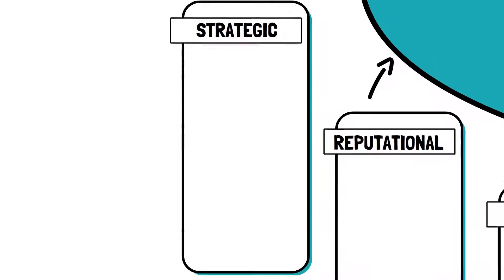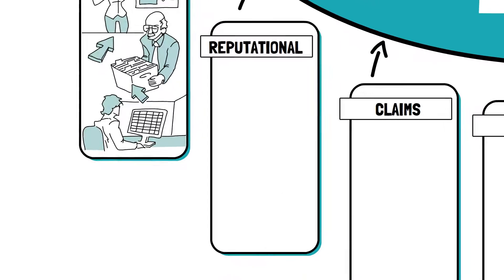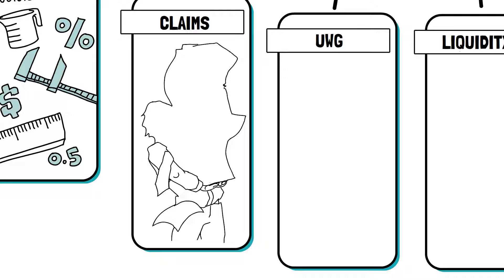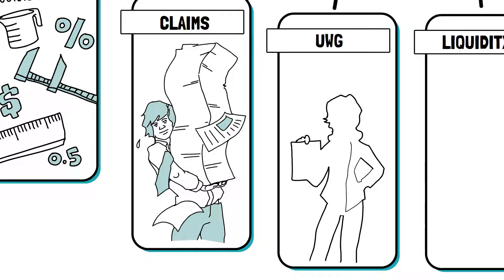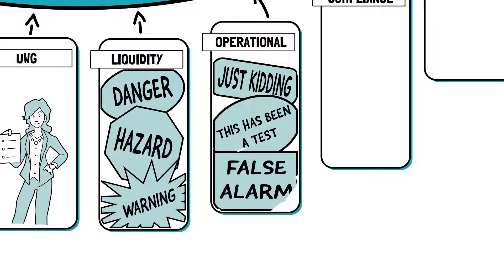Each line of business uses different processes and methods to collect and measure data. They use different measurement scales for key risk and performance indicators. Some reports have dozens of pages of data and some are so brief you can't pull actionable insights. This variability makes it hard to tell what's a red flag and what's a false alarm.